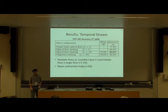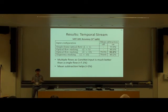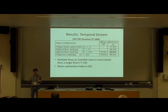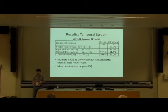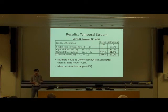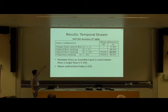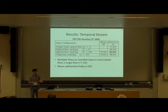For the temporal stream, a key observation is that increasing the number of stacked optical flows in the input is important. Starting with a single flow gives decent performance, but it gets much better when you stack five or ten flows. There's no benefit to going much beyond ten. Also, mean subtraction — which cancels out the effect of global motion — helps, though not dramatically. Using trajectory-based stacking does not give any improvement compared to simple flow stacking.